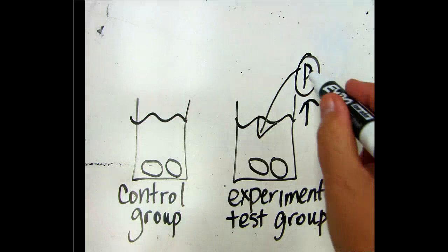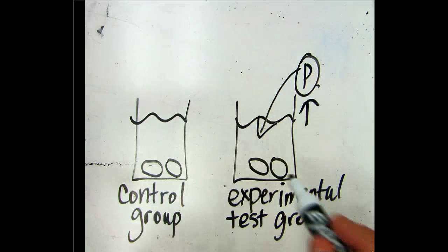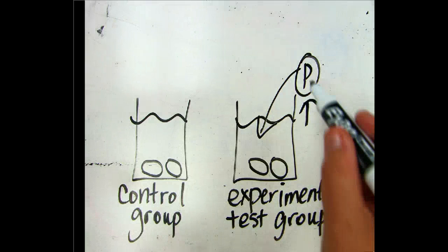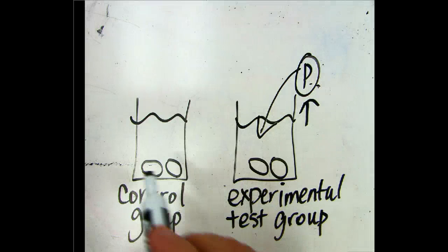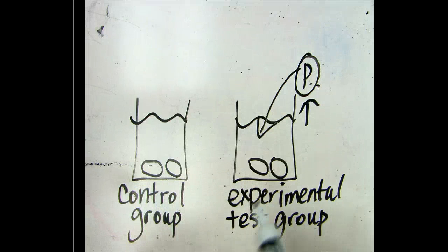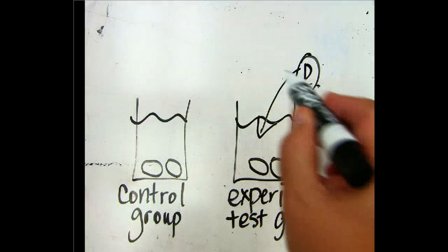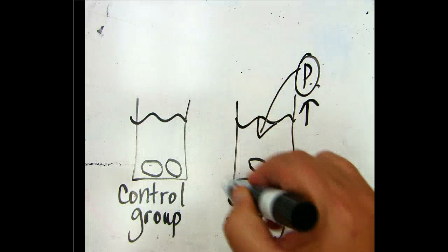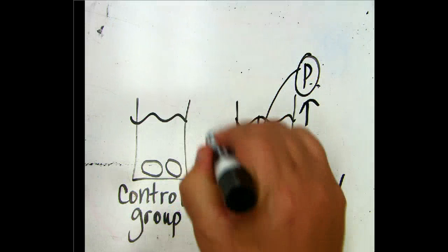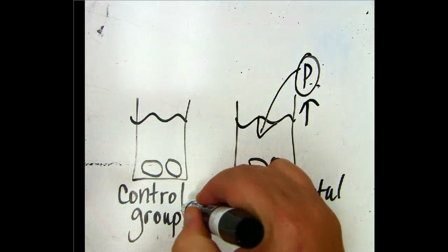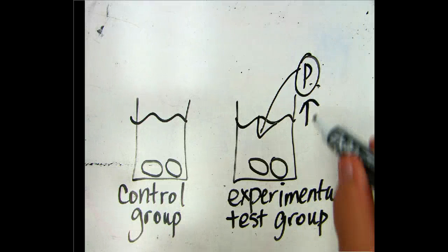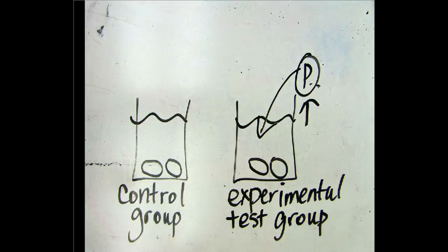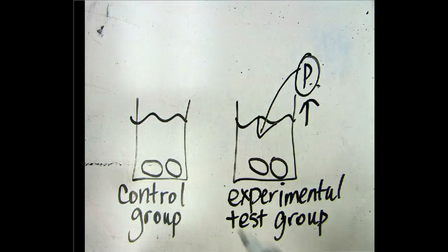So in the test group we're finding out if phosphate actually leads to the death of the mussels. And the reason that we have a control group is so that we can have something to compare it to. So we need to compare the results of the experimental group with the results of the control group. And that will help us to infer whether or not phosphate is causing the mussel population to decrease.